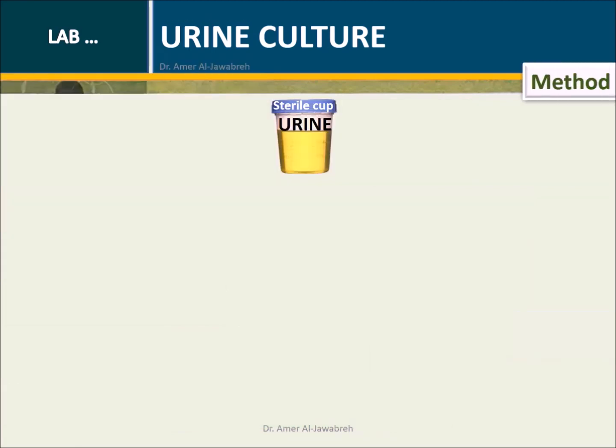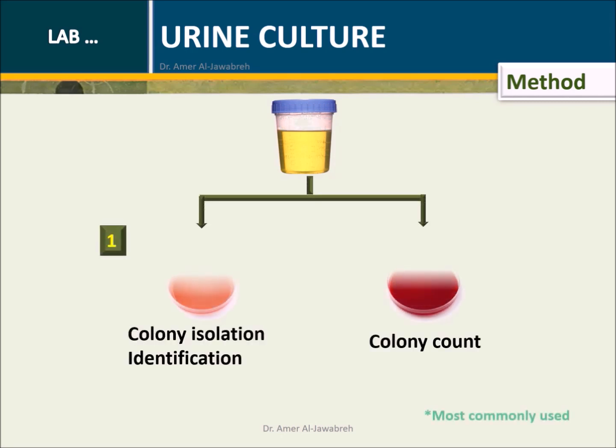Method: urine is collected in a sterile cup. Urine is cultured on MacConkey agar for isolation and identification, and on sheep blood agar for colony count.